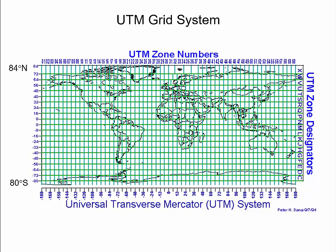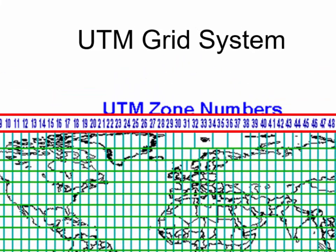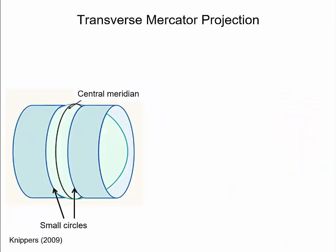Due to excessive map distortions that occur when mapping the entire world at once, various systems have been developed that subdivide the world into smaller zones or grids, where each zone employs its own map projection, which reduces map distortions. One example is the UTM grid system, where the area of the world between 84 degrees north and 80 degrees south is subdivided into 60 zones. Zones are numbered 1 to 60 from west to east, with each zone covering 6 degrees in longitude.